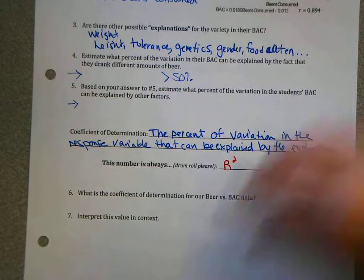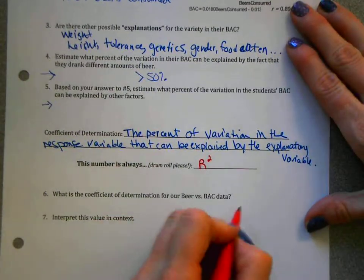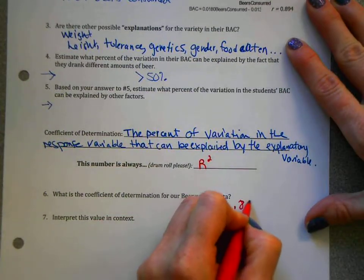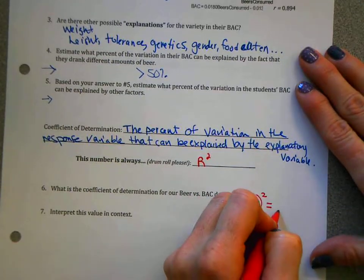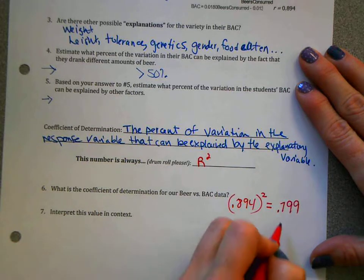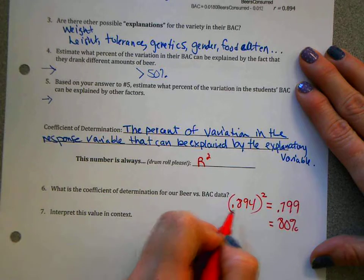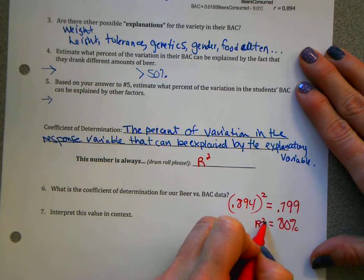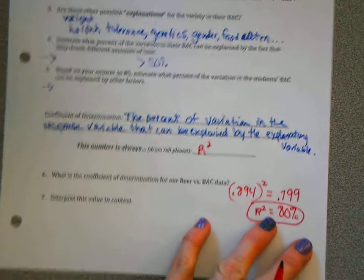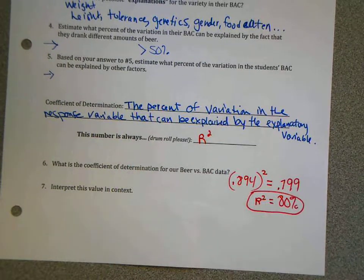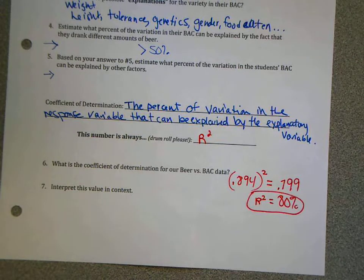If r is already done for you, you have it up here, and we've been using it for a lot of worksheets now, all you have to do is take 0.894 and square it, and you get another decimal, 0.799. And you just want to make that into a percent. Now, correlation is never made into a percent. But R squared is always thought about as a percent. Because once you square it, you won't have any negatives. And it is that percent of variation in the y that can be explained by the x variable.